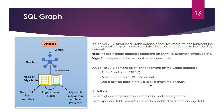The enhancements include edge constraints introduced in CTP 2.0, MATCH support in the MERGE statement, and the ability to use derived table or view aliases in graph MATCH queries. However, there are limitations: local or global temporary tables cannot be used as node or edge tables.